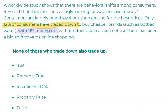I've highlighted the two important parts of the text: 12% of consumers have traded down, with 11% trading up. The statement says none of those who trade down also trade up. The problem is the text doesn't say the relationship between the 12% trading down and the 11% trading up — they could be completely different people or they could be the same people. We have no idea. So the final answer is going to be insufficient data.